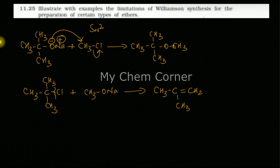So here, when you take your tertiary alkyl halide or your secondary alkyl halides, this will not form an ether, instead it will form an alkene. And this is one of the limitations of Williamson ether synthesis.